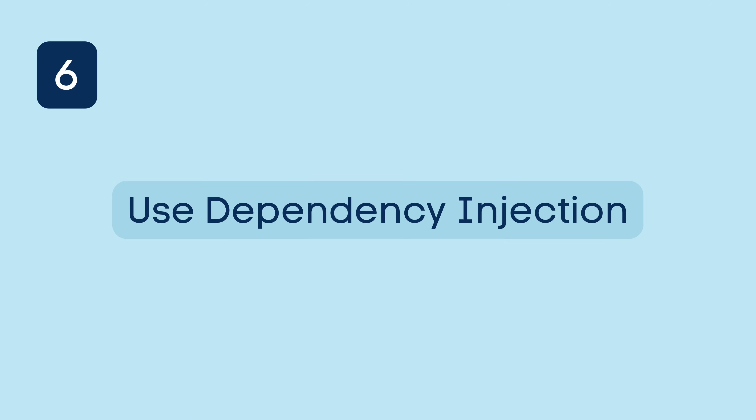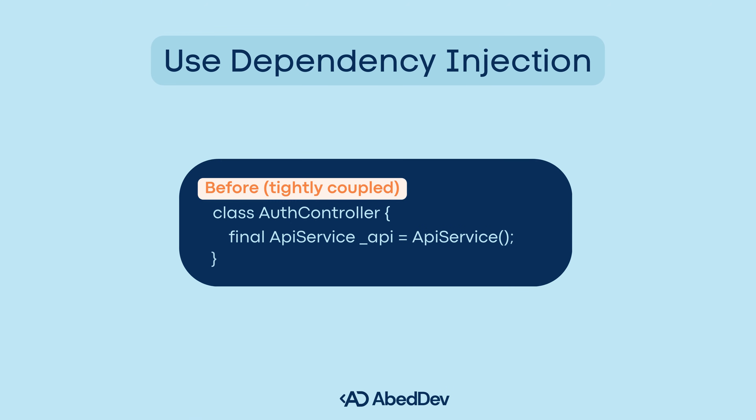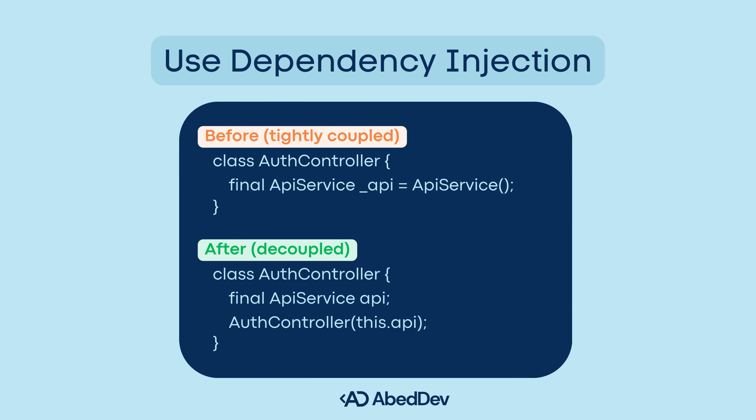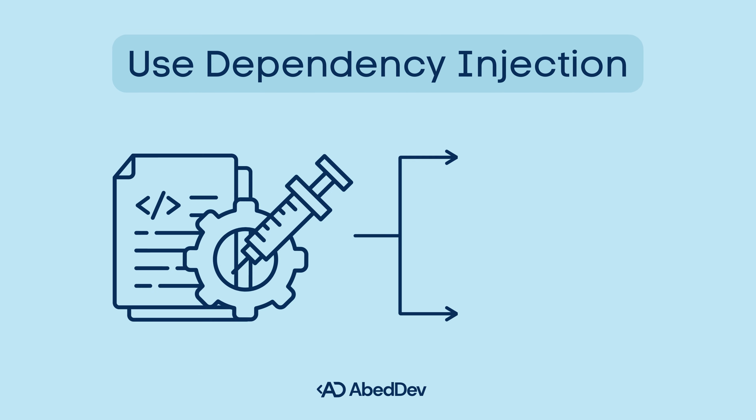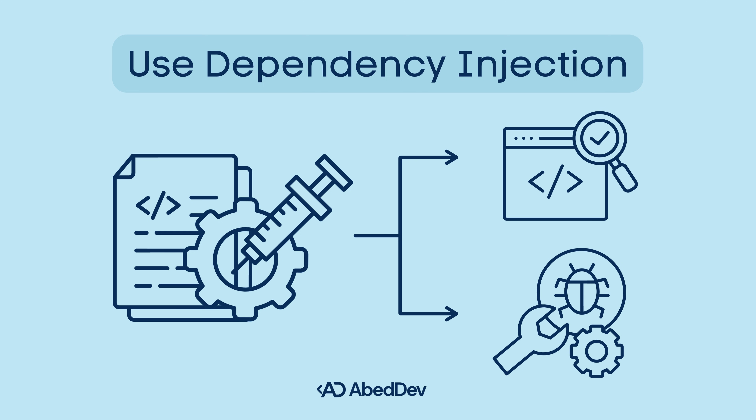Use dependency injection. Avoid hard-coding dependencies inside your classes. You can then swap implementations easily. Inject them so your code becomes testable and maintainable. In Flutter, use packages like GetIt or Riverpod for dependency injection.